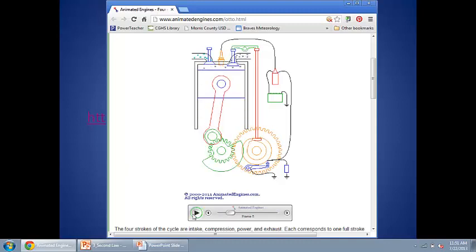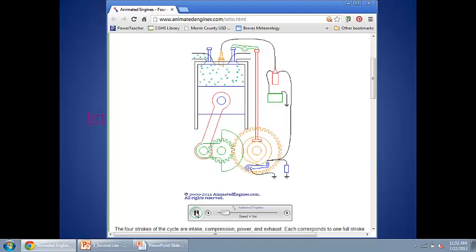The second valve up here at the top is called the exhaust valve. The exhaust stroke of the engine pushes the piston back up through the cylinder and pushes all of the combusted air out. So here we go through the intake, the compression, the ignition, the power, and the exhaust stroke. And that is how your car runs.